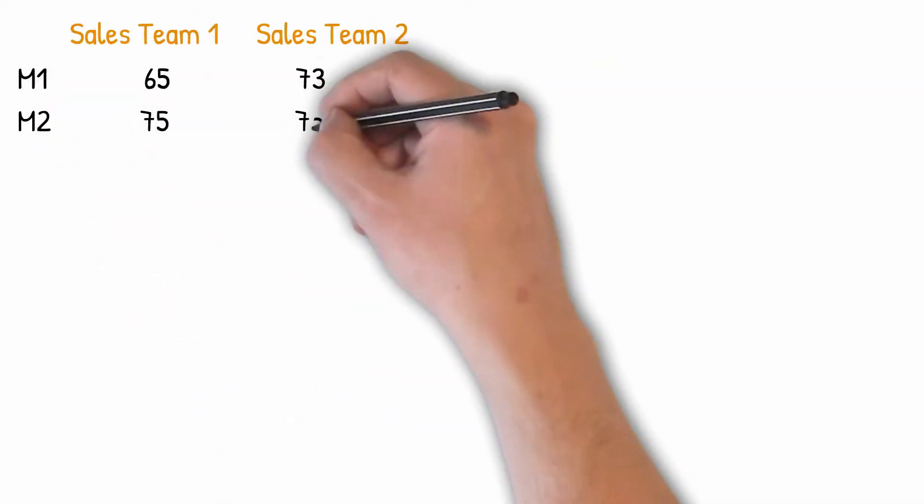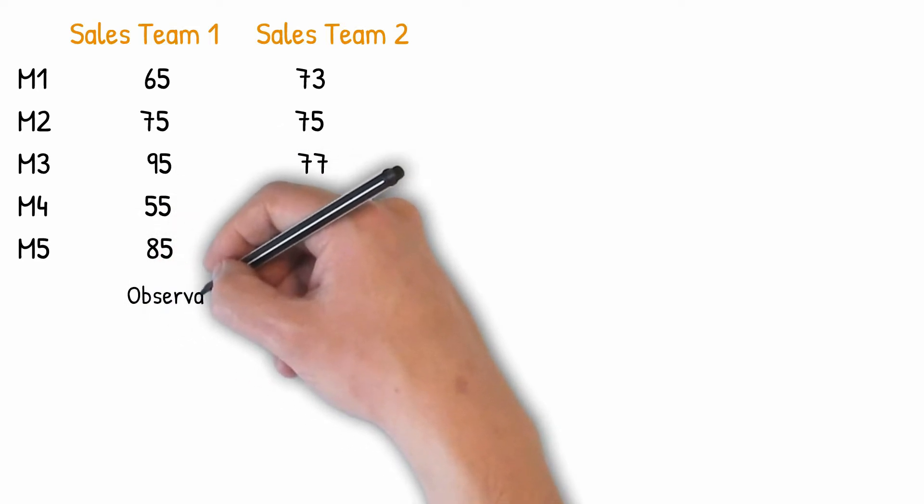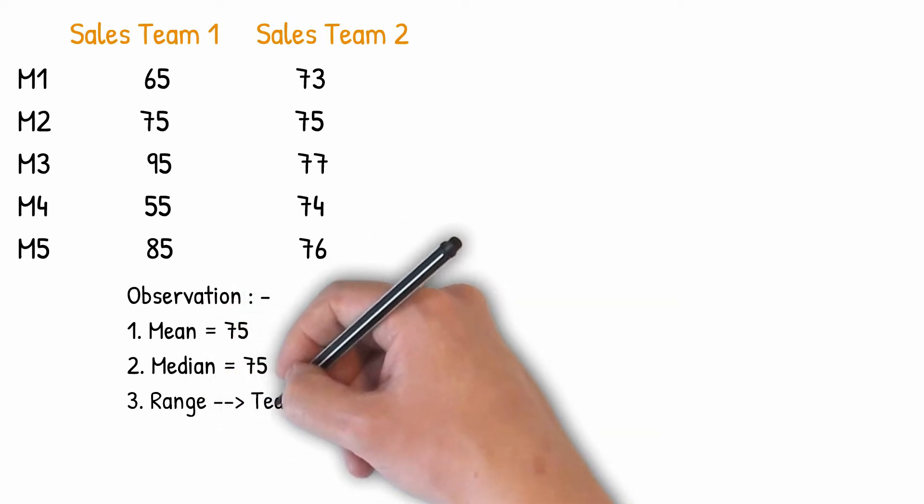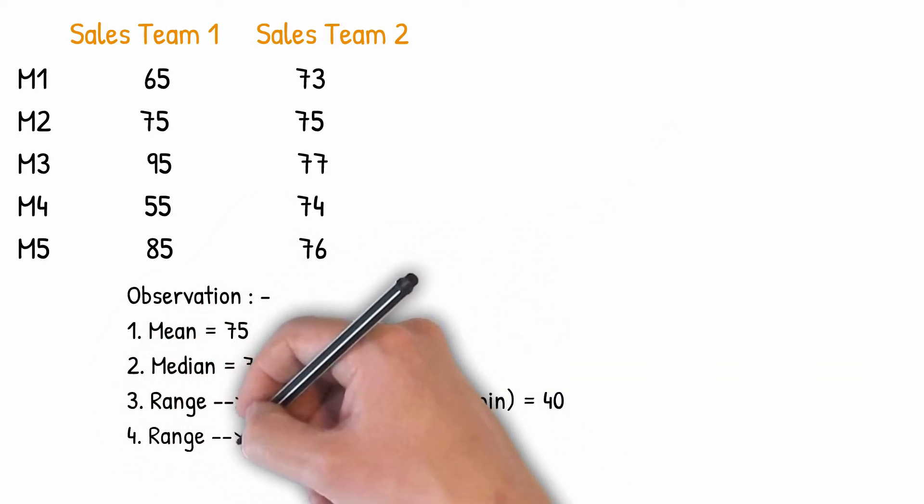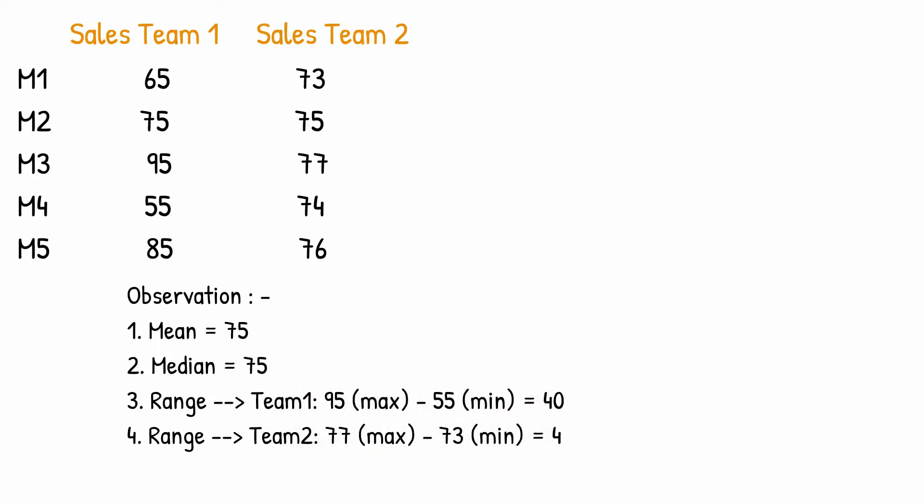Let's look at the monthly sales figures for two sales teams in a company for five months. On preliminary observation we see that the mean and median of both teams is the same, which is 75. We have defined the range in the previous video and so range of Team 1 is 40 and range of Team 2 is 4, which is one-tenth of that of the first team.